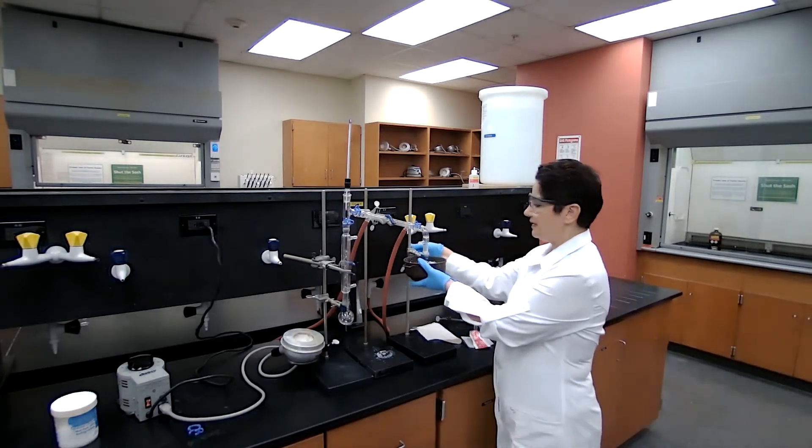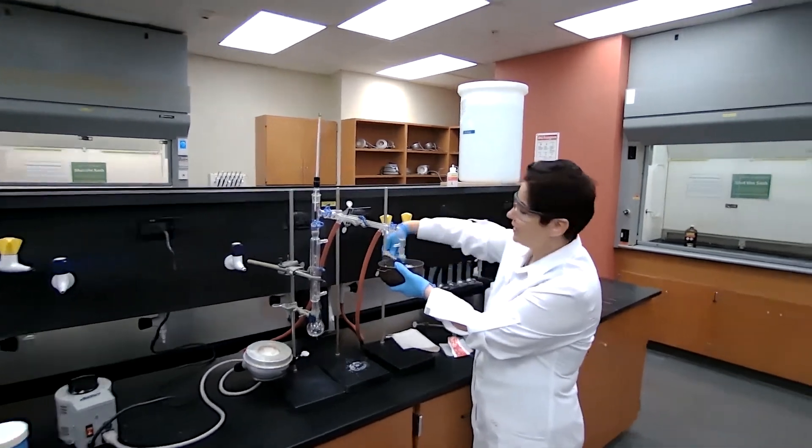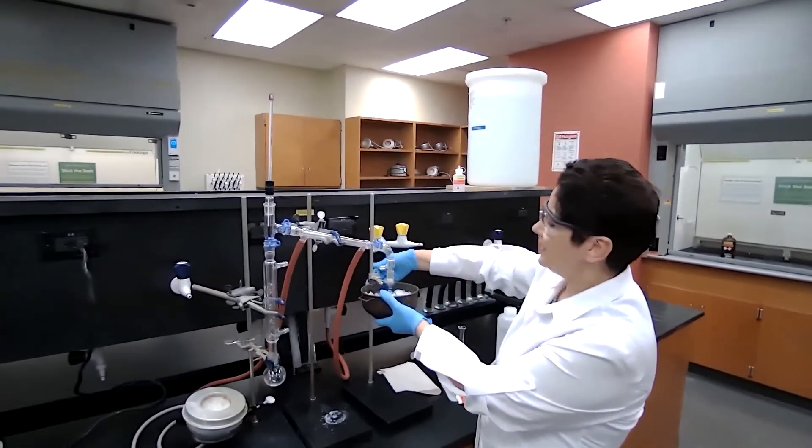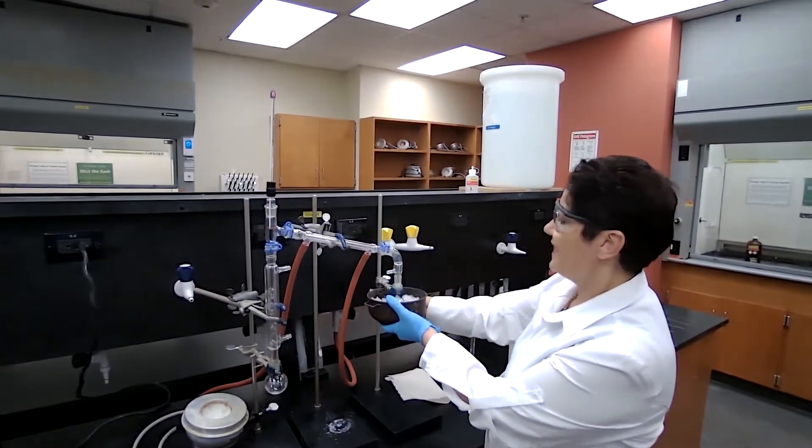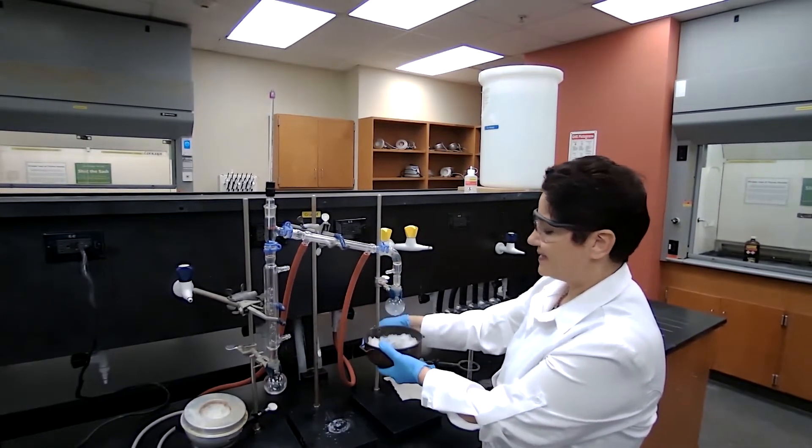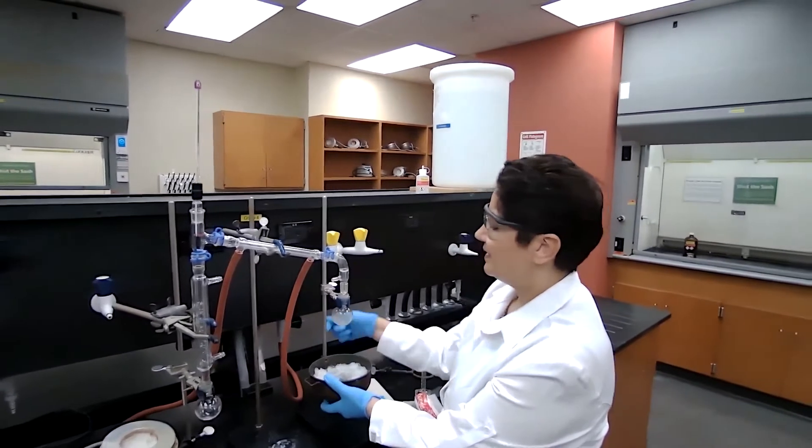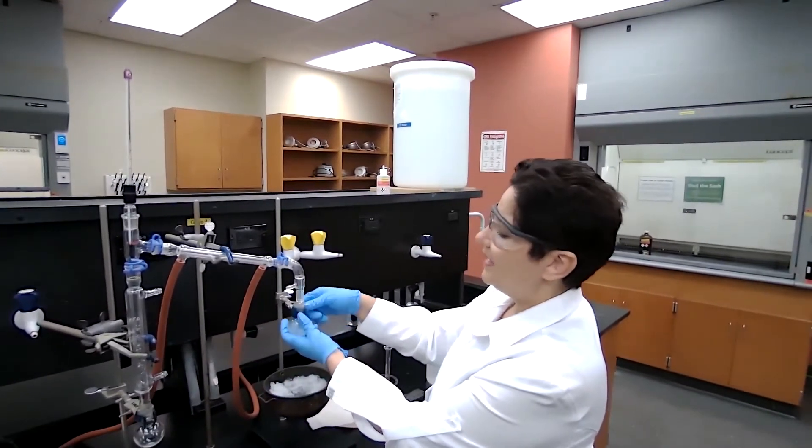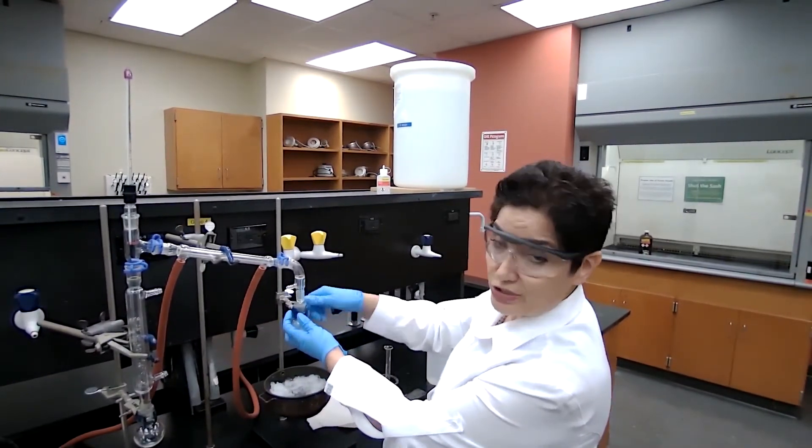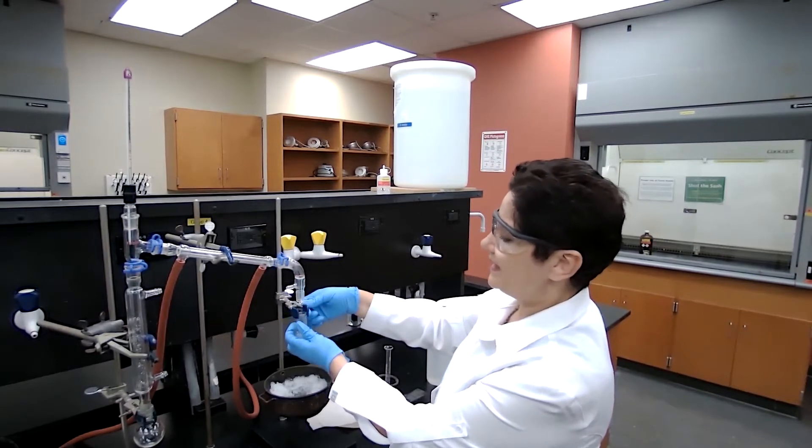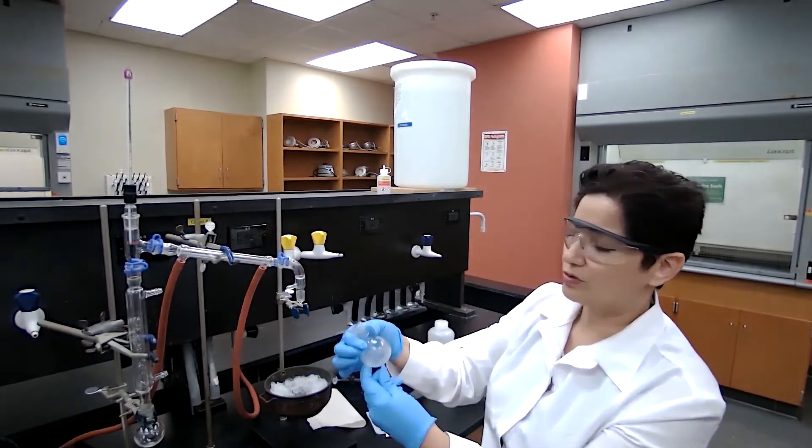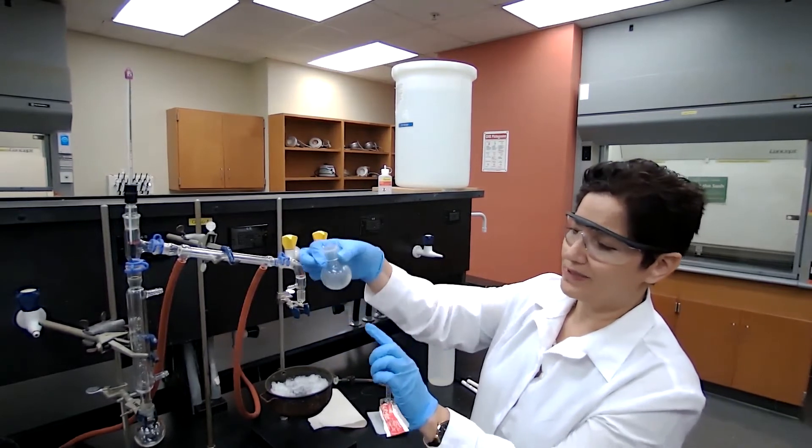The only difference here compared to experiment two is that we are using ice baths around our receiving flask. The receiving flask is a boiling flask, and the instruction says to collect about between nine and ten milliliters.